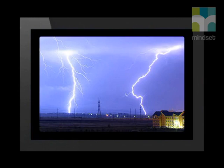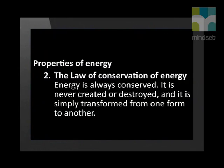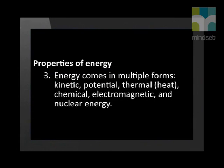An example of energy transformation is in a typical lightning strike: 500 million joules of electric potential energy is converted into the same amount of energy in other forms — most notably light energy, sound energy, and thermal energy. Secondly, energy is always conserved; that is, it is never created or destroyed. It is simply transformed from one form to another. This is known as the law of conservation of energy.